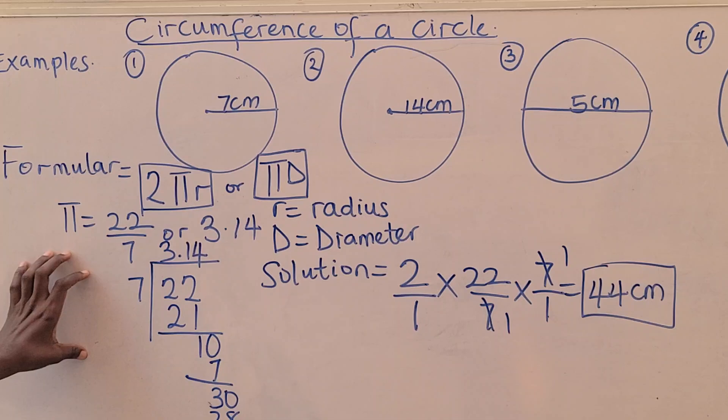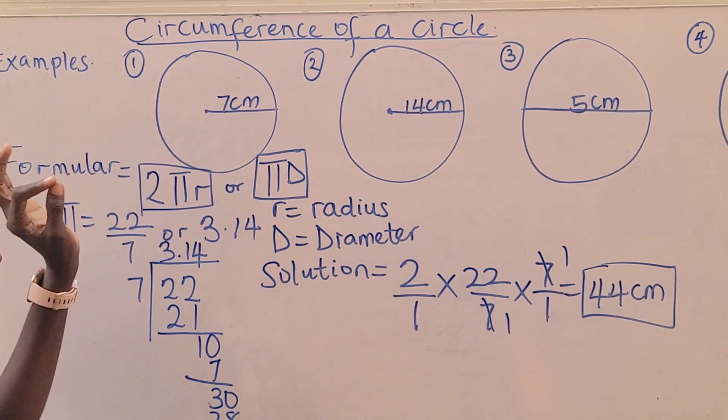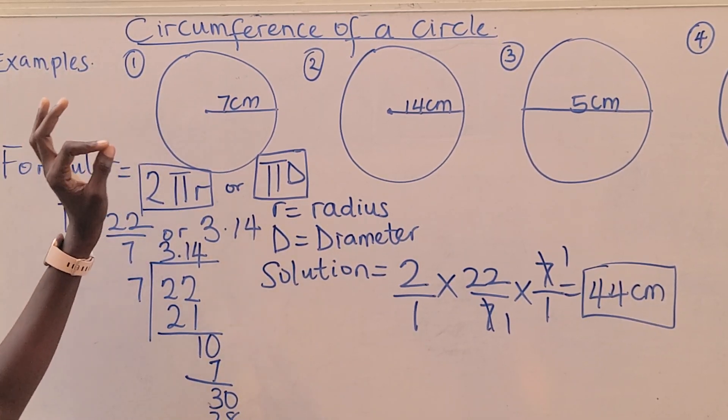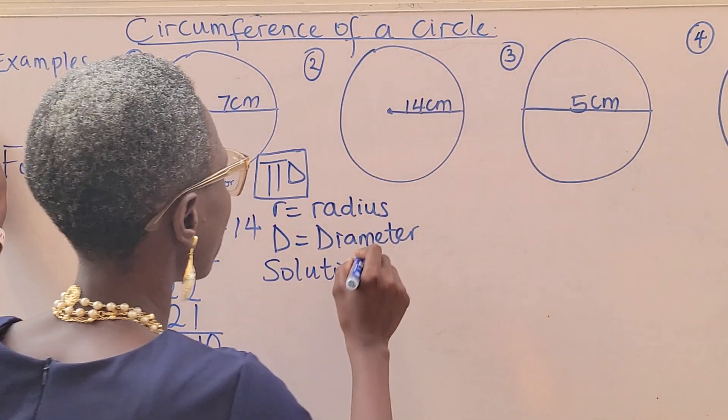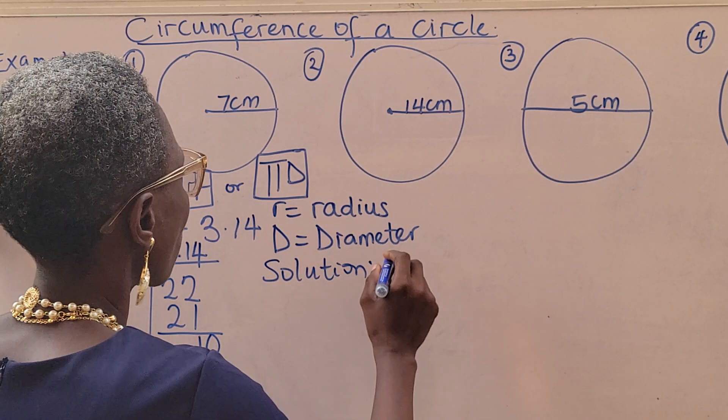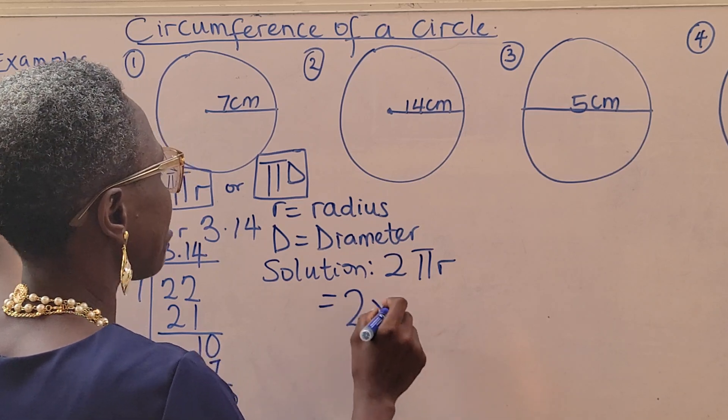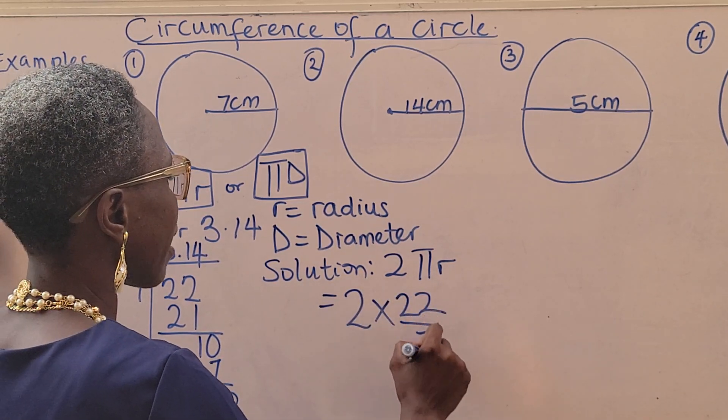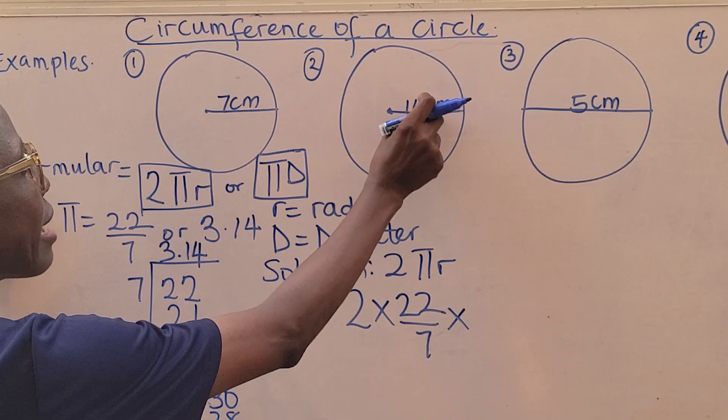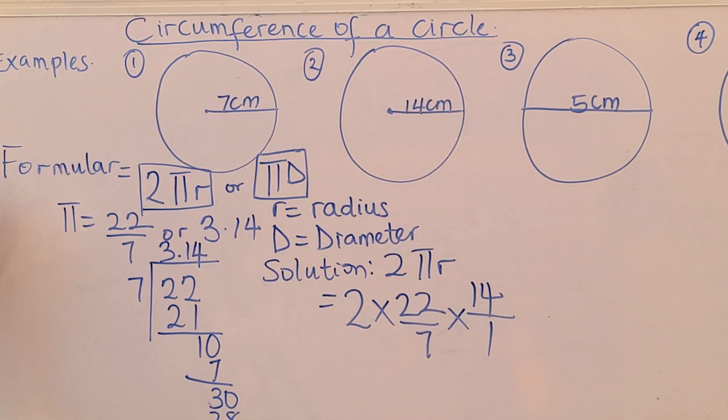I took my time to explain the formula so that you can know the formula is important. Once you understand the formula, you can solve any question on circumference of a circle. To the next question, which is a radius of 14 centimeters. The formula still remains the same.